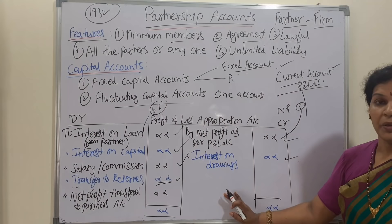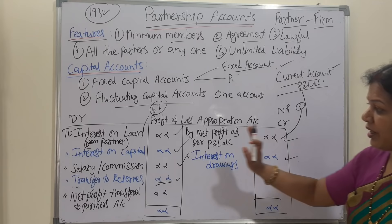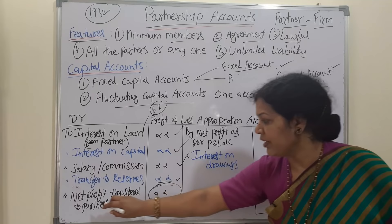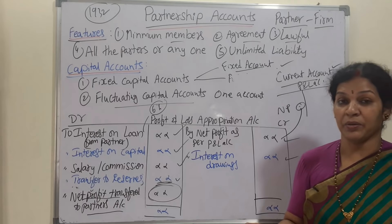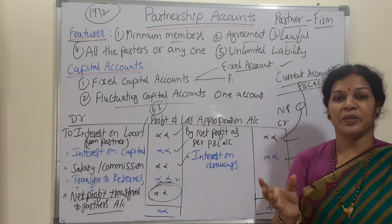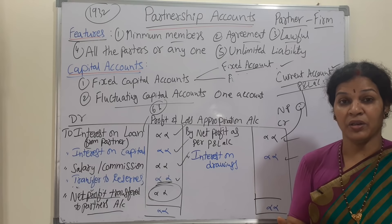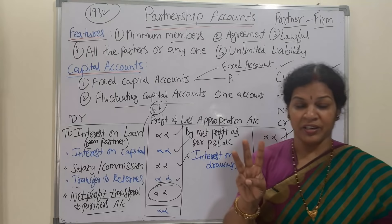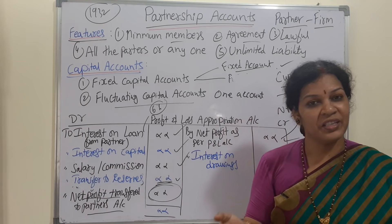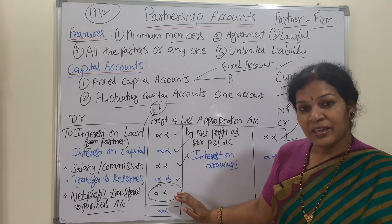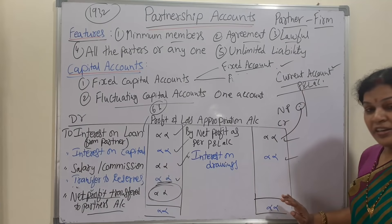Generally the credit side will be more, and the balance amount — called net profit — is transferred to the partners' accounts. How do we transfer it? As per the decided profit-sharing ratio. For example, if three partners A, B, and C share profits in the ratio of 3:2:1, and the net profit is seventy thousand, we distribute accordingly.